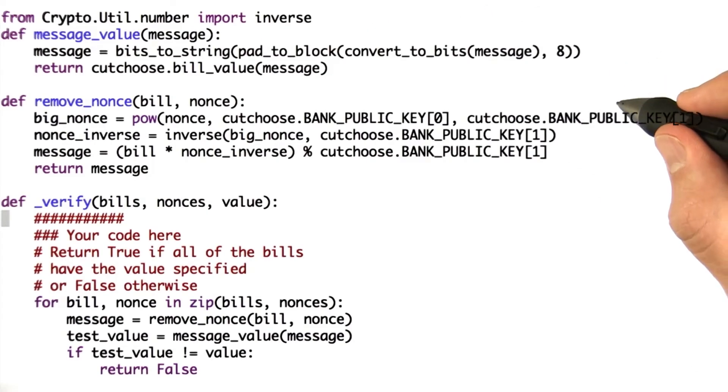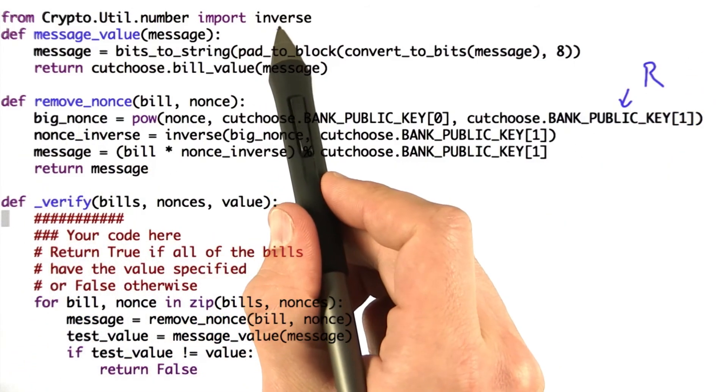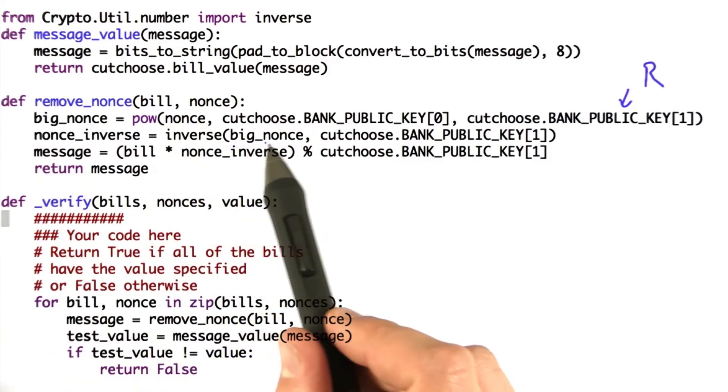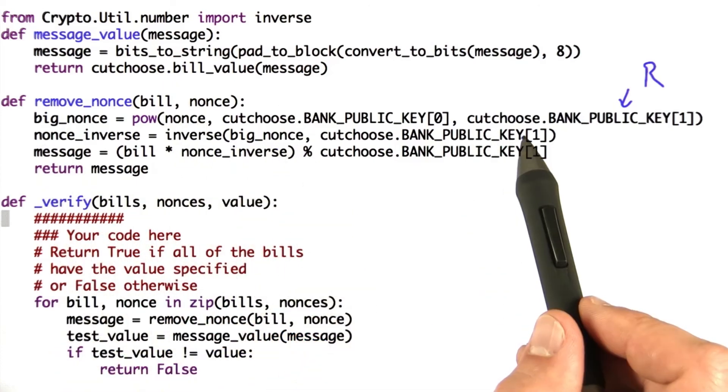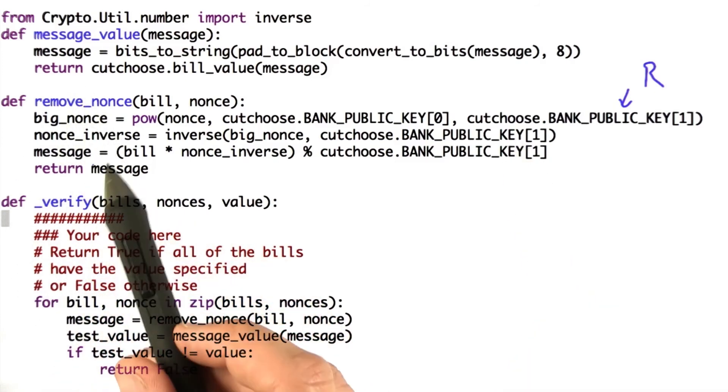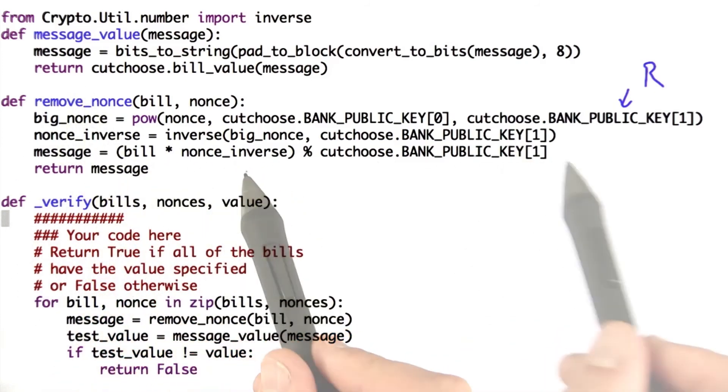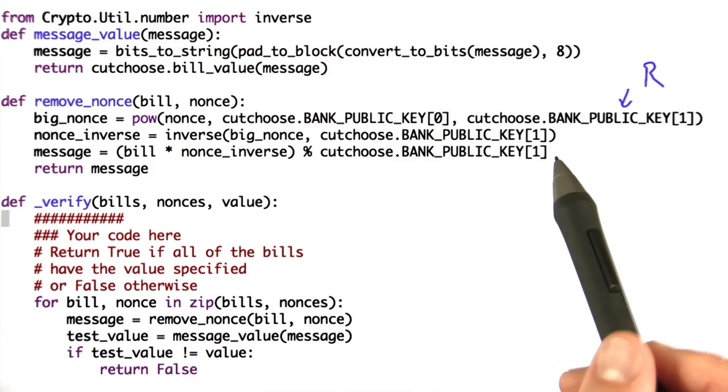And here is my solution. In this first step, we calculate what I call capital R, big nonce. We use the inverse function from the PyCrypto library to calculate the inverse of our big nonce, modulus our n value. We can then remove the nonce from our bill by multiplying the bill times the nonce inverse, again modulus n, and returning.